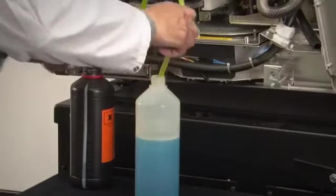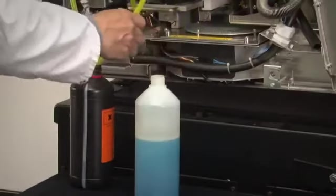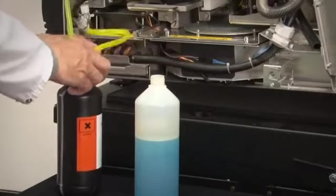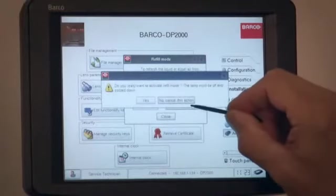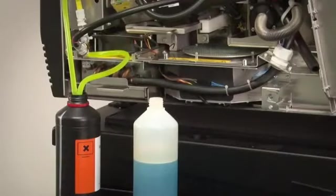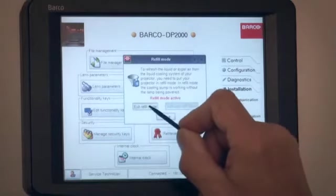Now remove the hose from the bottle holding the old liquid and put it into the new bottle of cooling liquid together with the other hose. Restart the pump by selecting activate refill mode. In this mode, the pump runs for 2 minutes, stops for 30 seconds and then repeats indefinitely until you select exit refill mode.